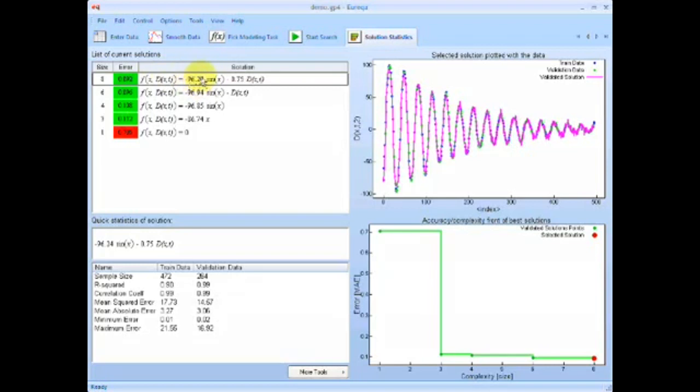And the ratio of the gravity over the length of the pendulum is 96.24.